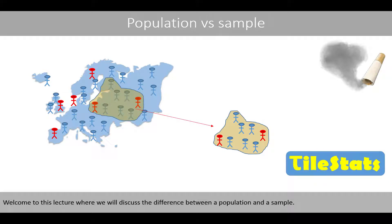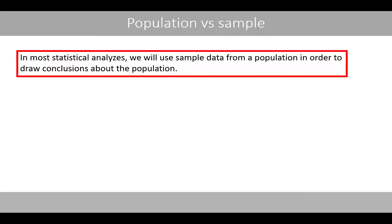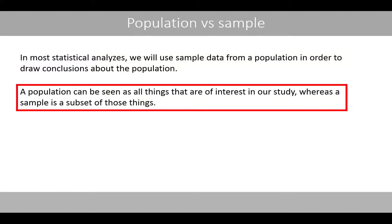Welcome to this lecture where we will discuss the difference between a population and a sample. In most statistical analyses, we will use sample data from a population in order to draw conclusions about the population. A population can be seen as all things that are of interest in our study, whereas a sample is a subset of those things.